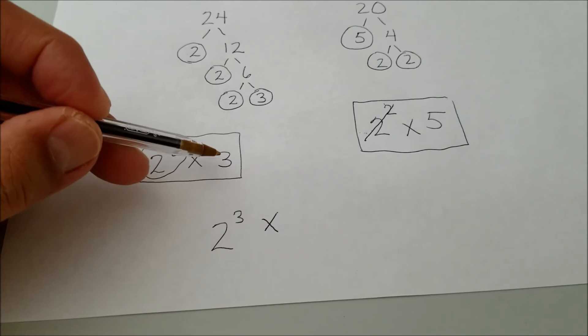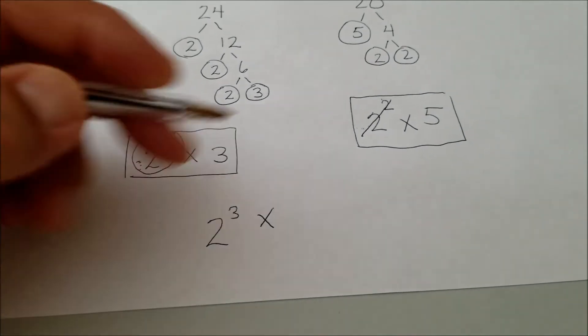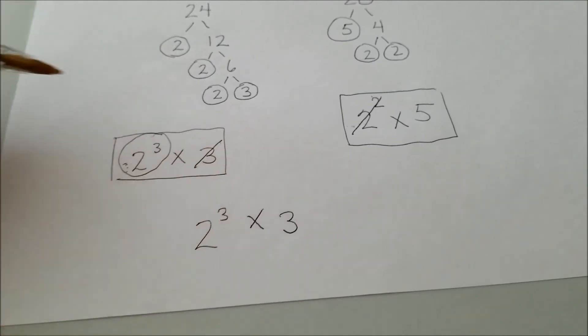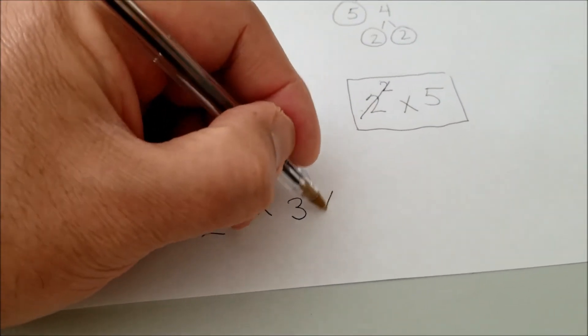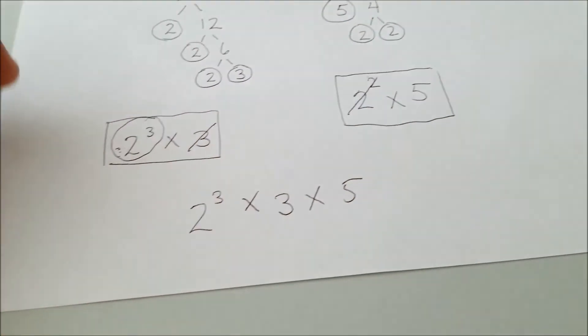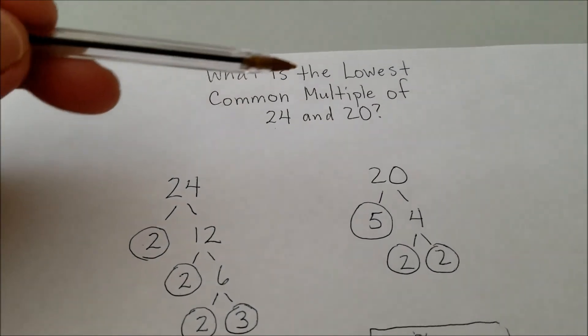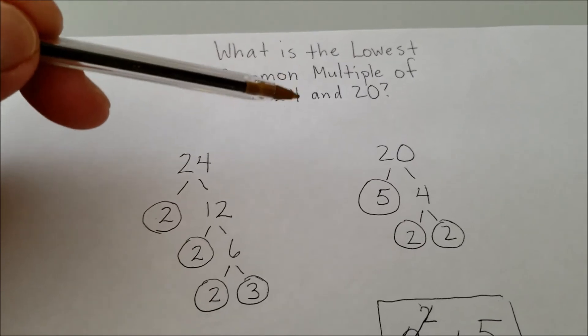The next number I see in value is the 3. And that's crossed off. And then I have that last 5. Okay. So here is the answer to what is the lowest common multiple of 24 and 20.